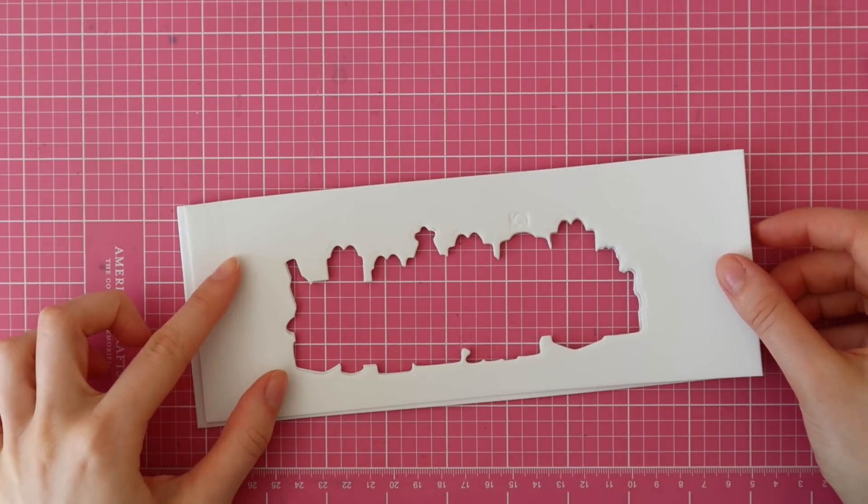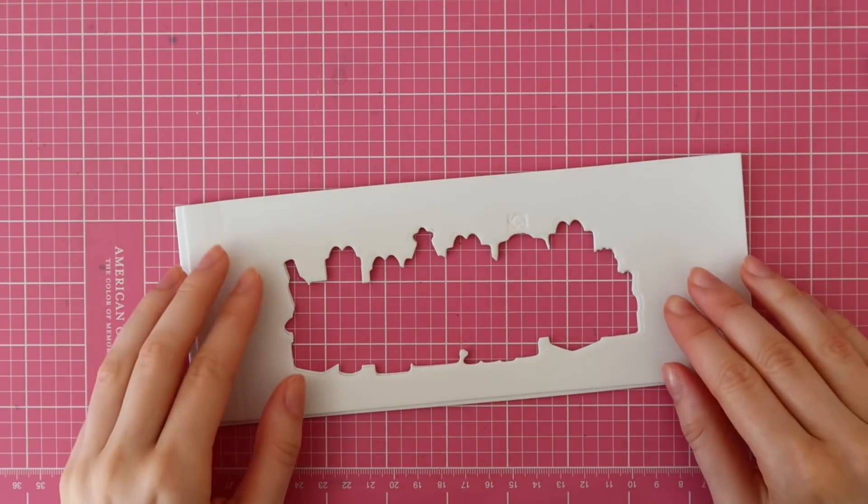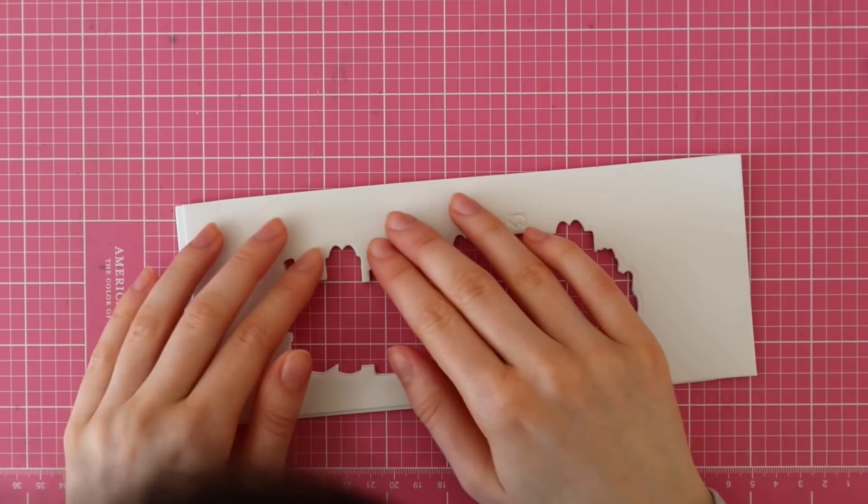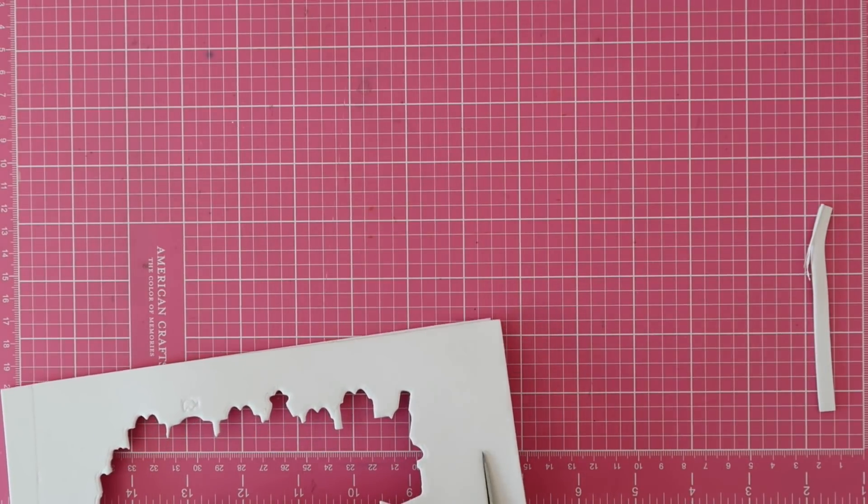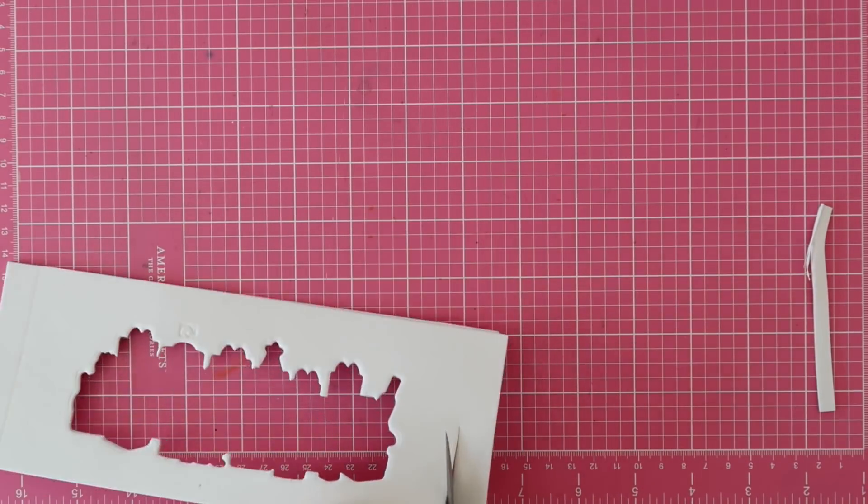So I just applied some more of that Tonic Nouveau Deluxe Adhesive. Then I'm lining up these two pieces and adhering them on top of each other. Then I lined that up with my shaker window with the cardstock piece.